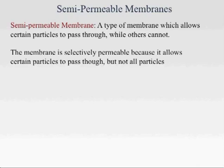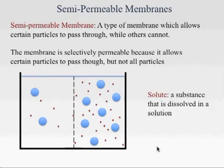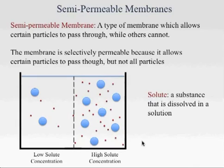Taking a look at this container, in the centre we see a semi-permeable membrane. We also see a number of solutes. A solute is a substance that is dissolved in a solution. In this container we see blue solutes which are large, and small red solutes. We can tell that there's a high solute concentration on the right hand side and a low solute concentration on the left hand side.